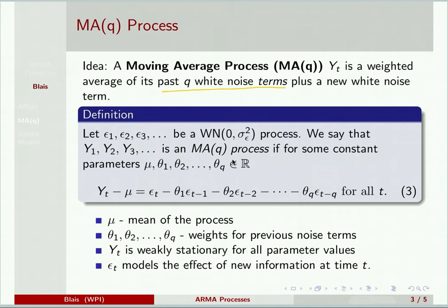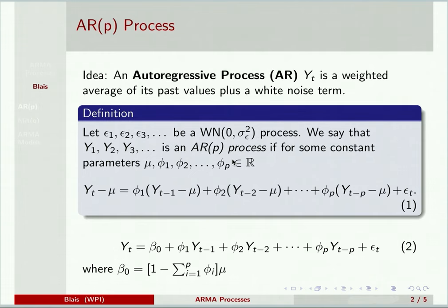In particular, the autocorrelation for an MA(q) process drops to zero after a lag of q. So for lags larger than q, we have no autocorrelation, whereas for an AR process, the autocorrelation never drops to zero. It does decay to zero, but it never drops to zero.